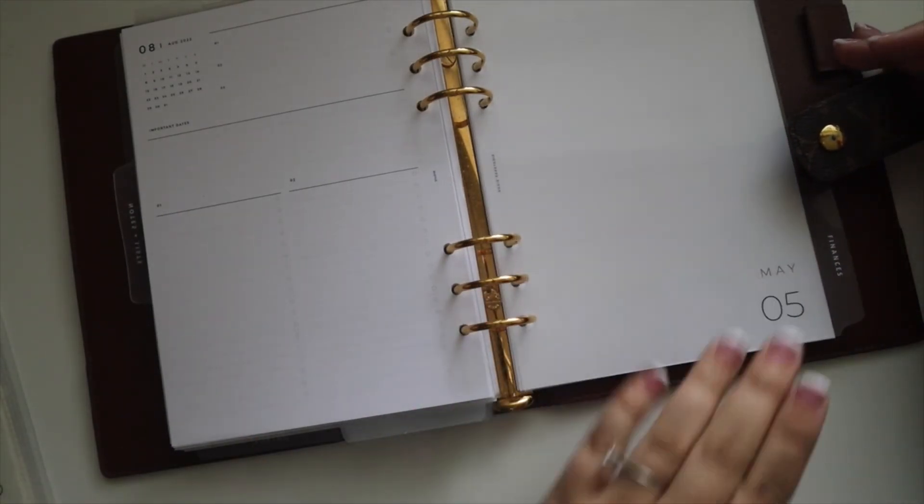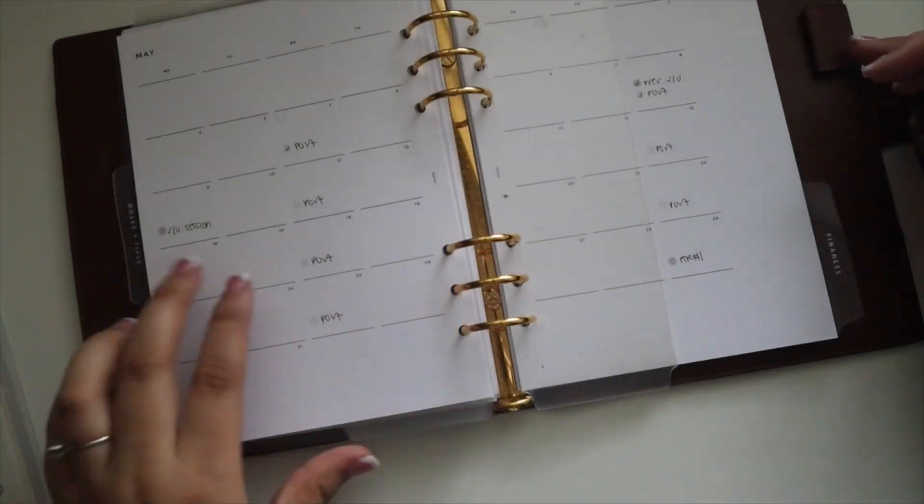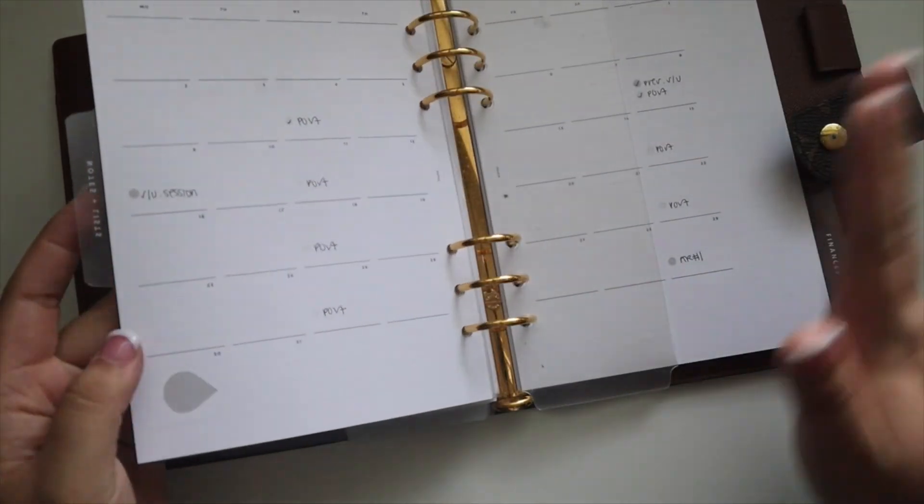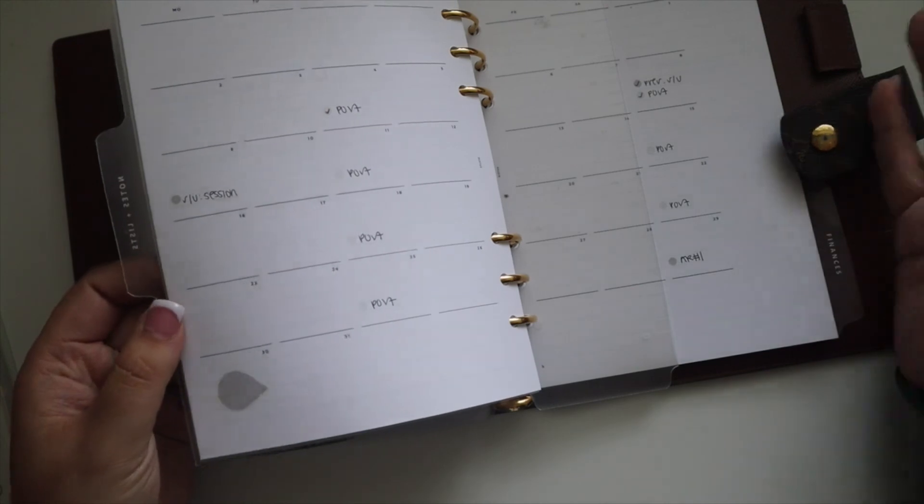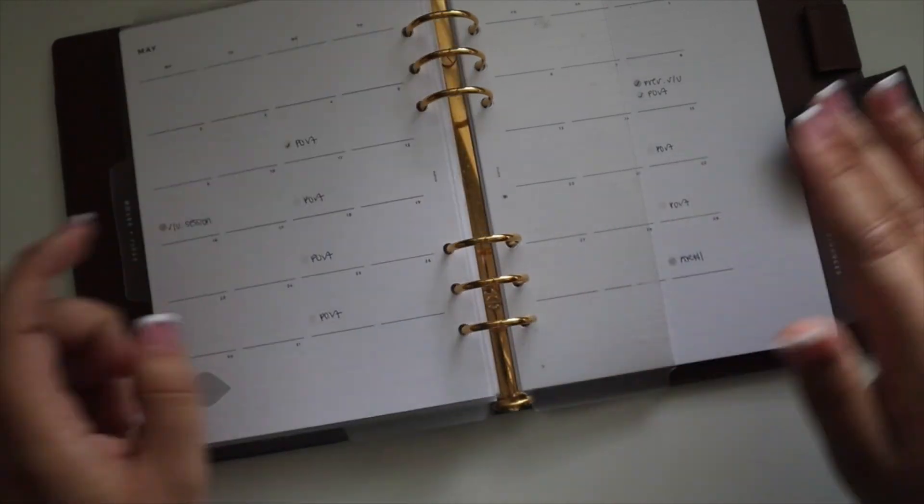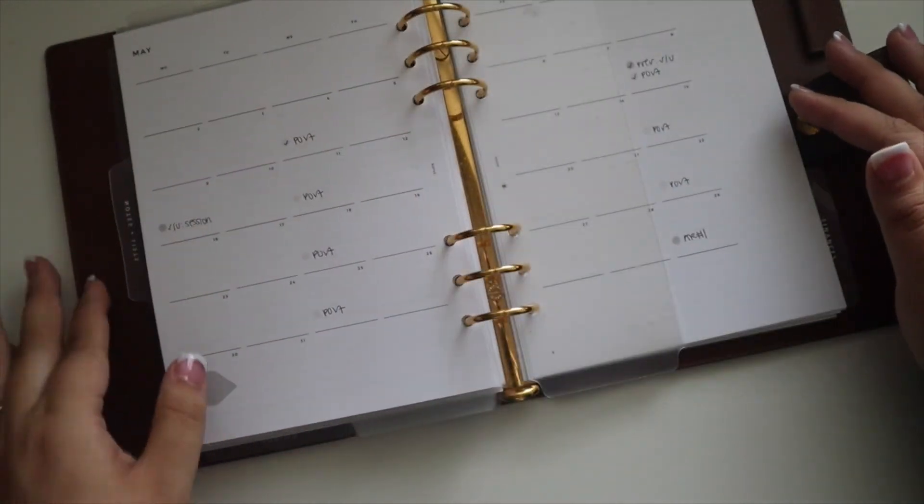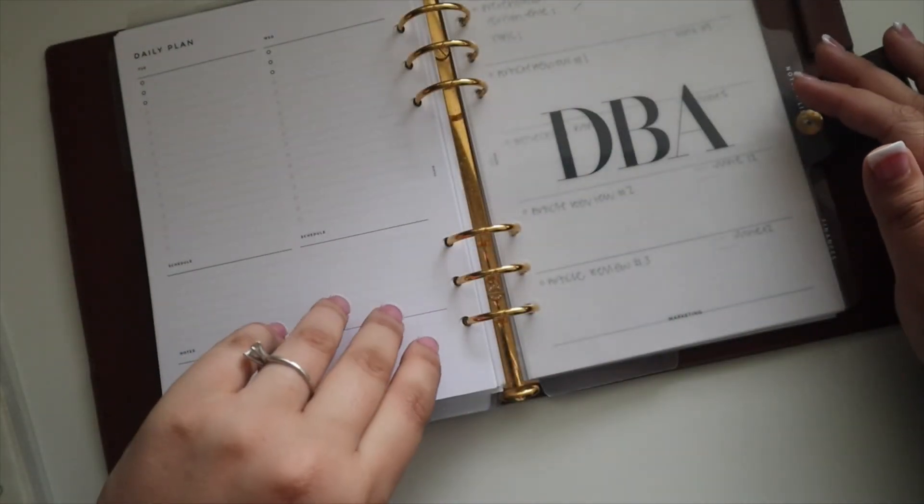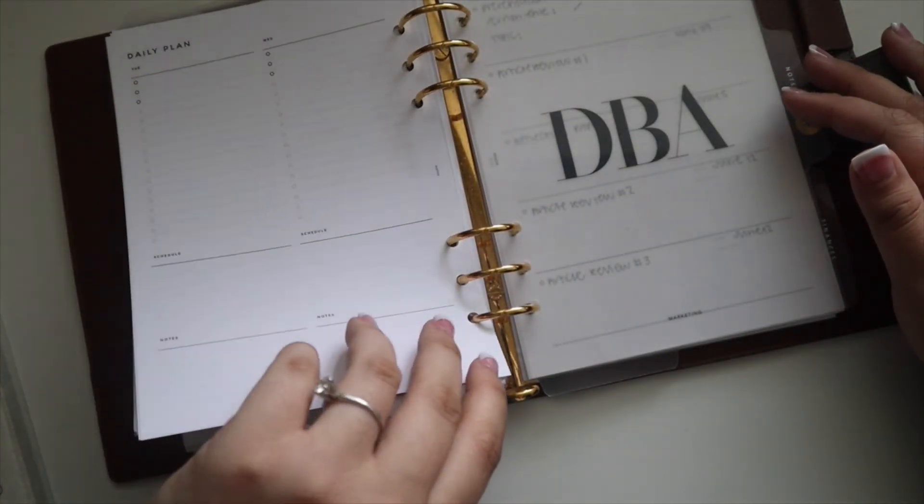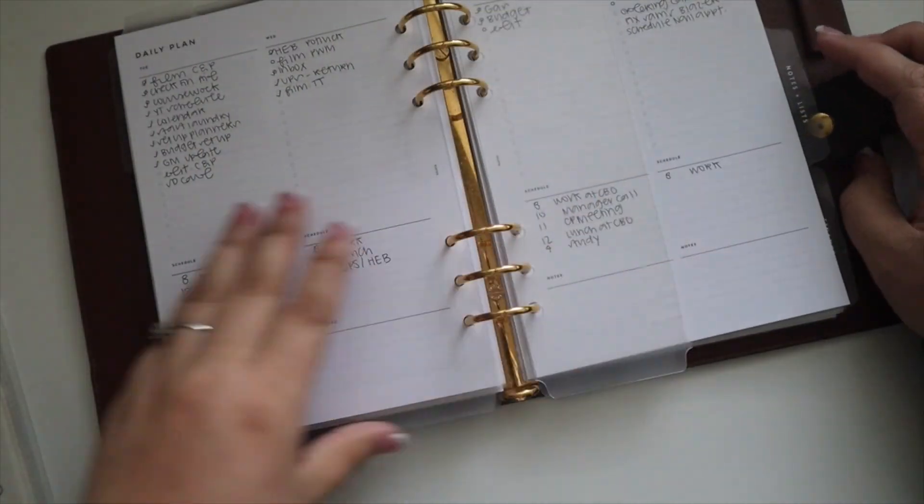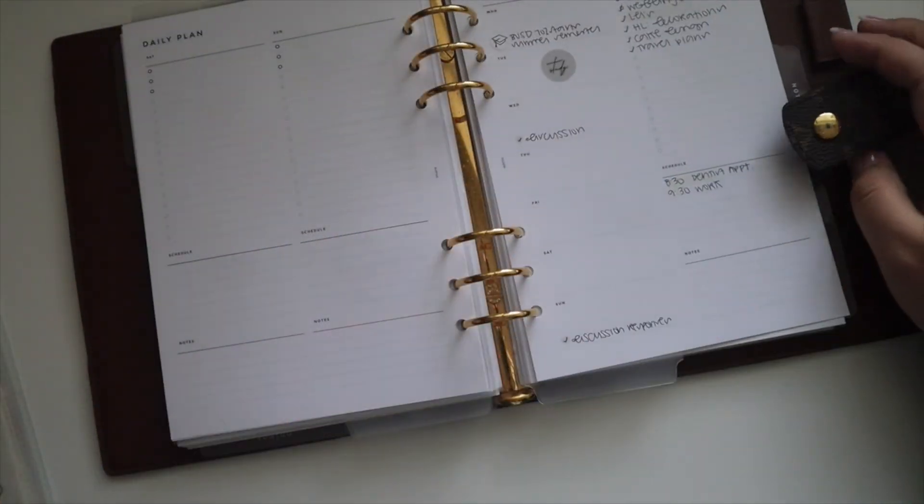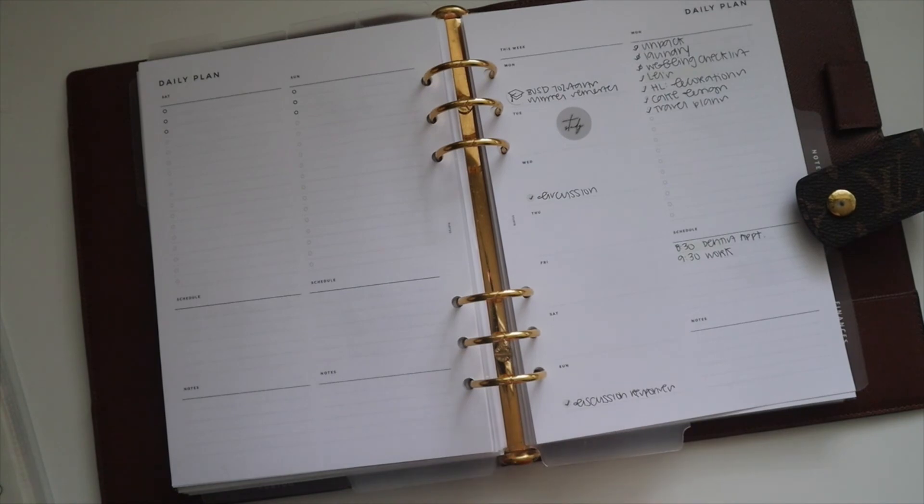I'm using the finance tab for finances, go figure, it works well. Other than that, that is the setup. Here's the school section, nothing really changed, nothing really to add. I've just been using the monthly inserts. Other than that, that is going to be it for this video. If y'all have any questions, please feel free to let me know, and thank you guys so much for watching.